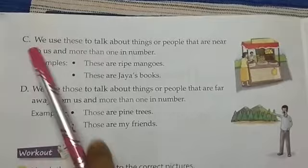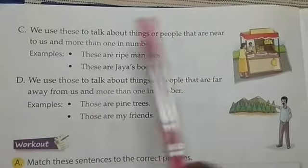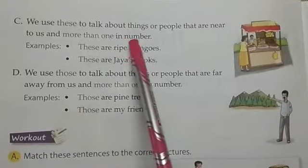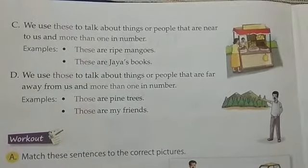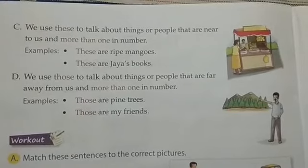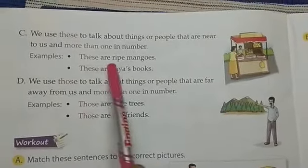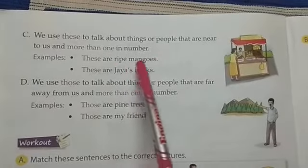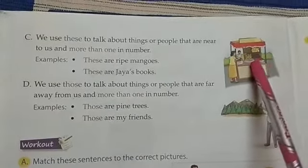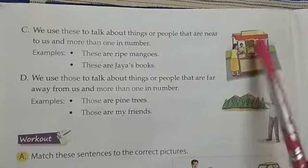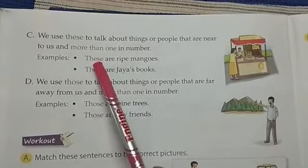Number C: We use 'these' to talk about things or people that are near to us and more than one in number. For example: These are ripe mangoes. This lady is talking about the mangoes — they are more than one and the mangoes are nearby, so we will use the word 'these'.